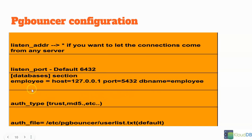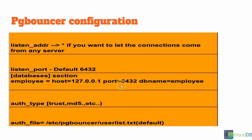This entry acts as a DB alias — this is the alias name and this is the actual backend database name. Any connection coming to PG Bouncer with this database name will be routed to this host at port 5432, and the backend database name is employee. The databases section is pretty important.